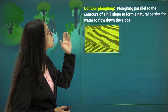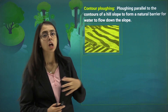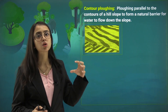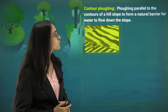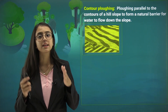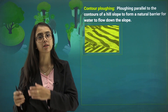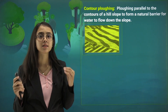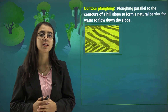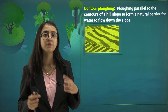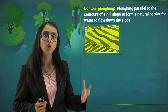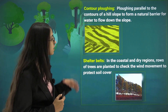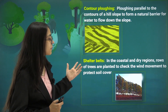The next method is contour plowing — plowing parallel to the contours of the hill slopes to form a natural barrier for the water to flow down the slope. This avoids soil erosion.